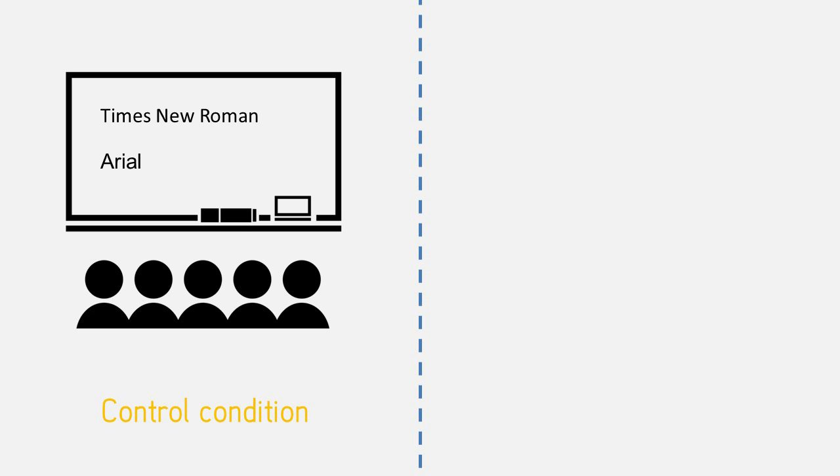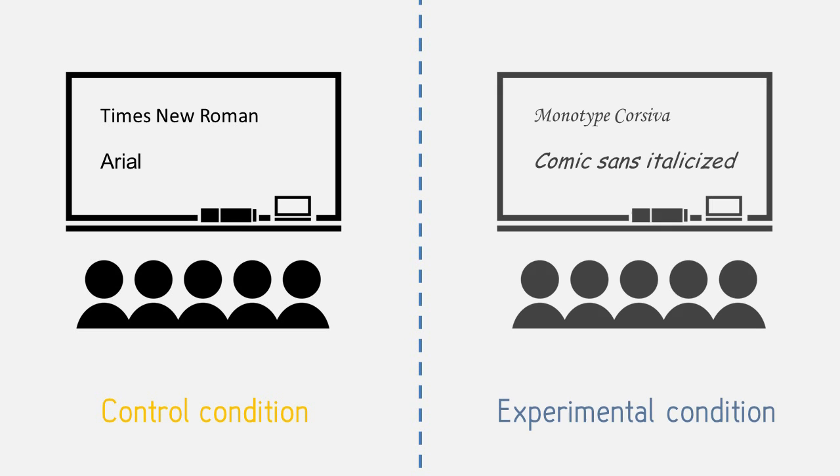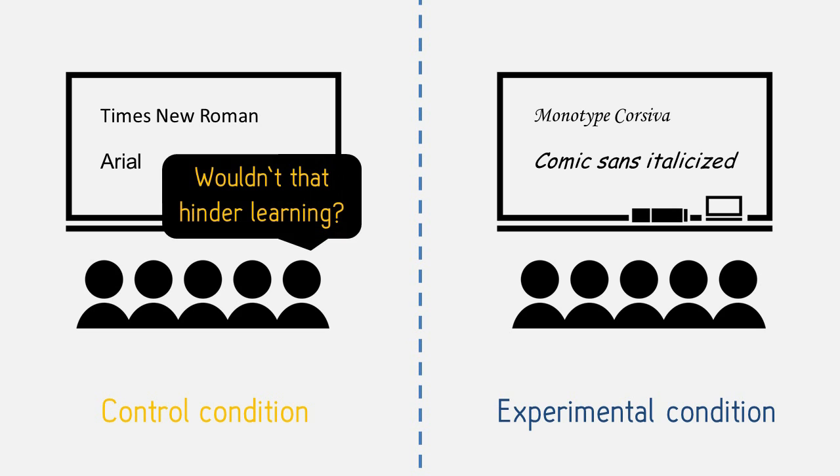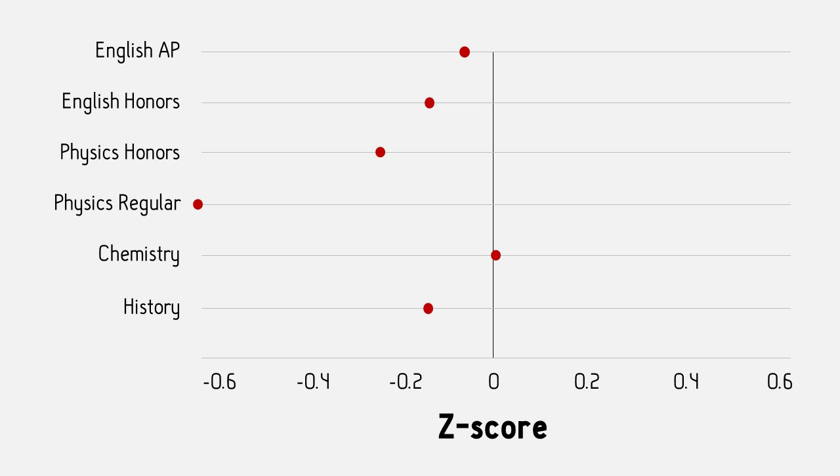Instead of the usual Times New Roman or Arial, students would now have to read fonts like Monotype Corsiva. Now, you'd think that this would actually hinder the learning process, right? Yet, compared to classes with the normal font, these students scored significantly higher in their later tests.